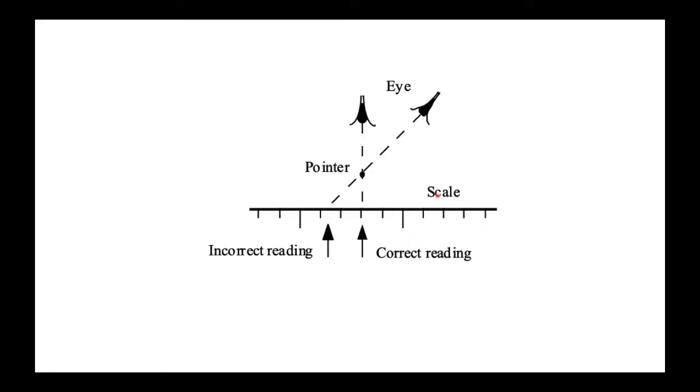One example of a systematic error is a so-called parallax error. Let's say you're trying to measure the distance of something with a ruler, but your pointer is above the scale or away from the scale. If you look vertically down you're going to get the correct reading, but if you're looking at an angle your reading is going to be off a bit because of the way the light travels. So in this case, making lots of repeat measurements, you're always going to get a value that's off to the side—that's a systematic error.